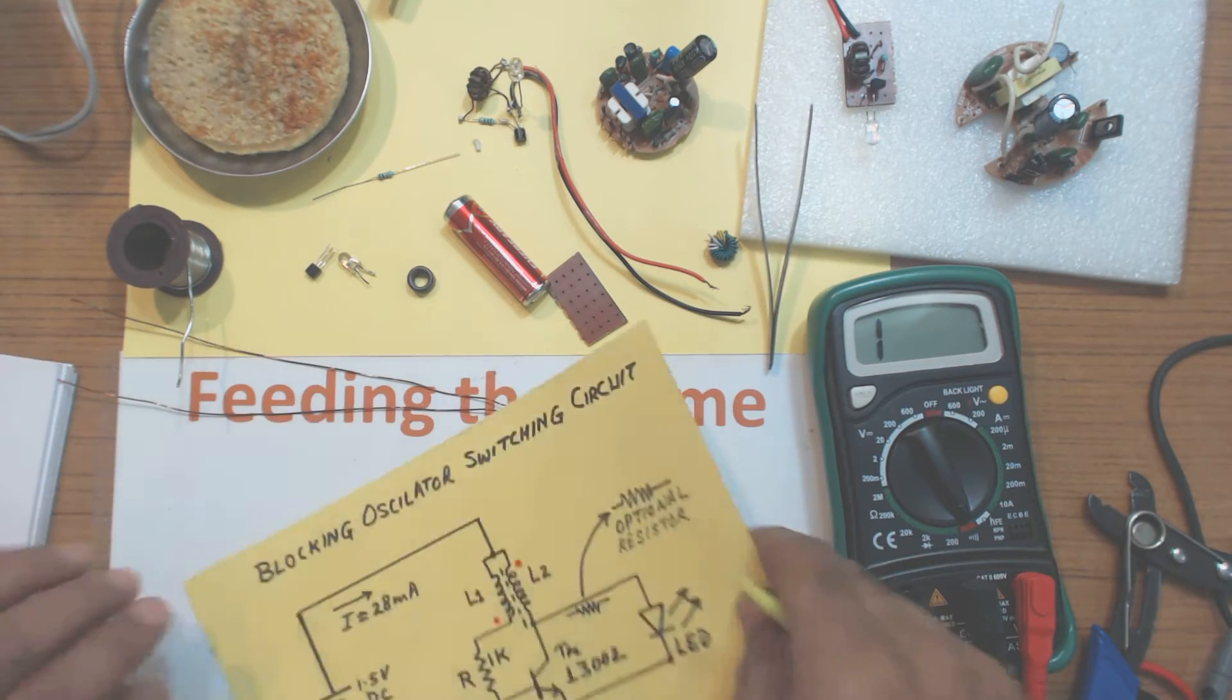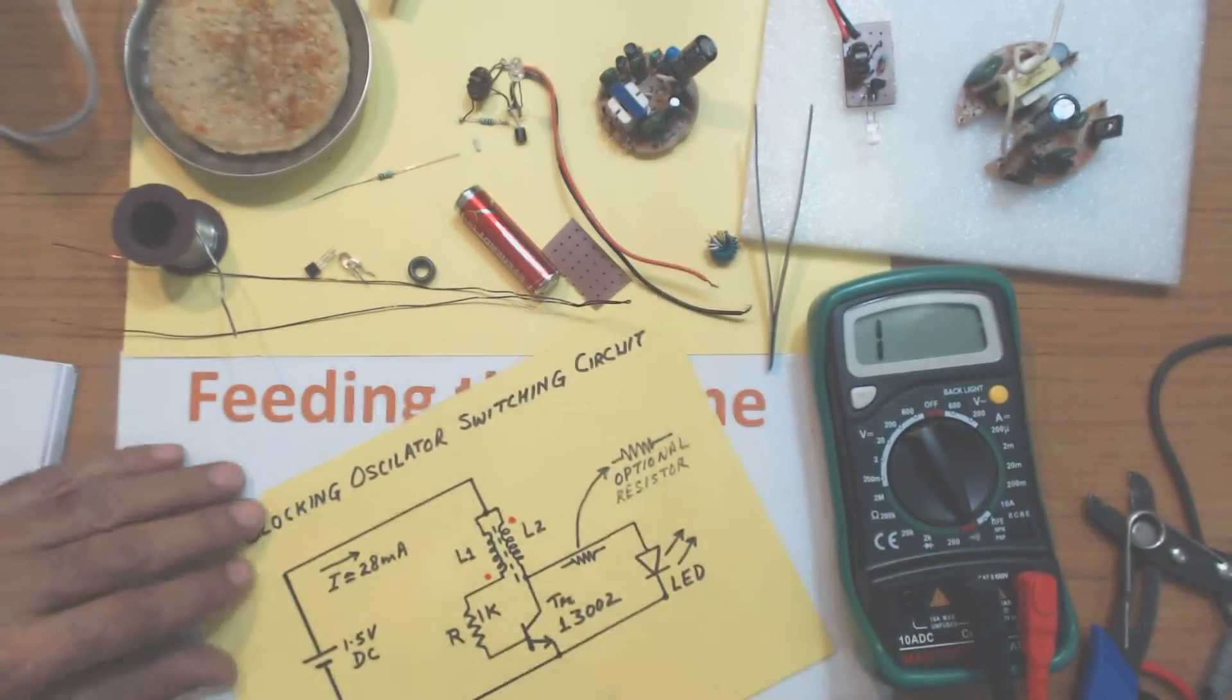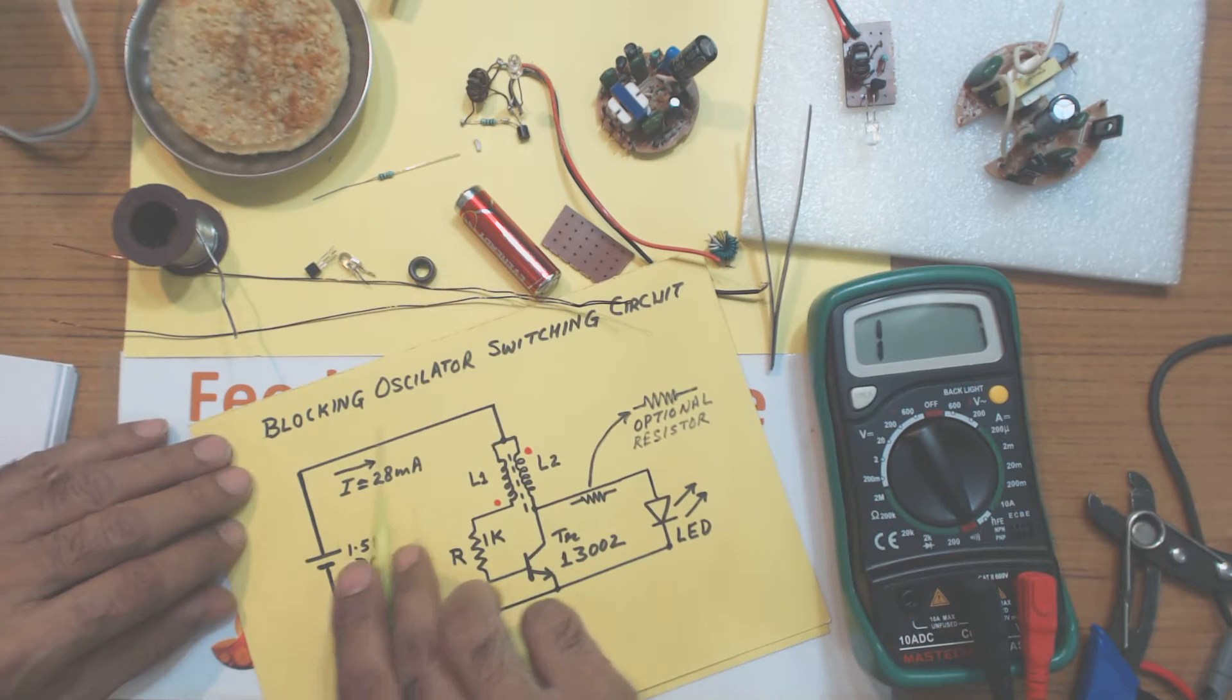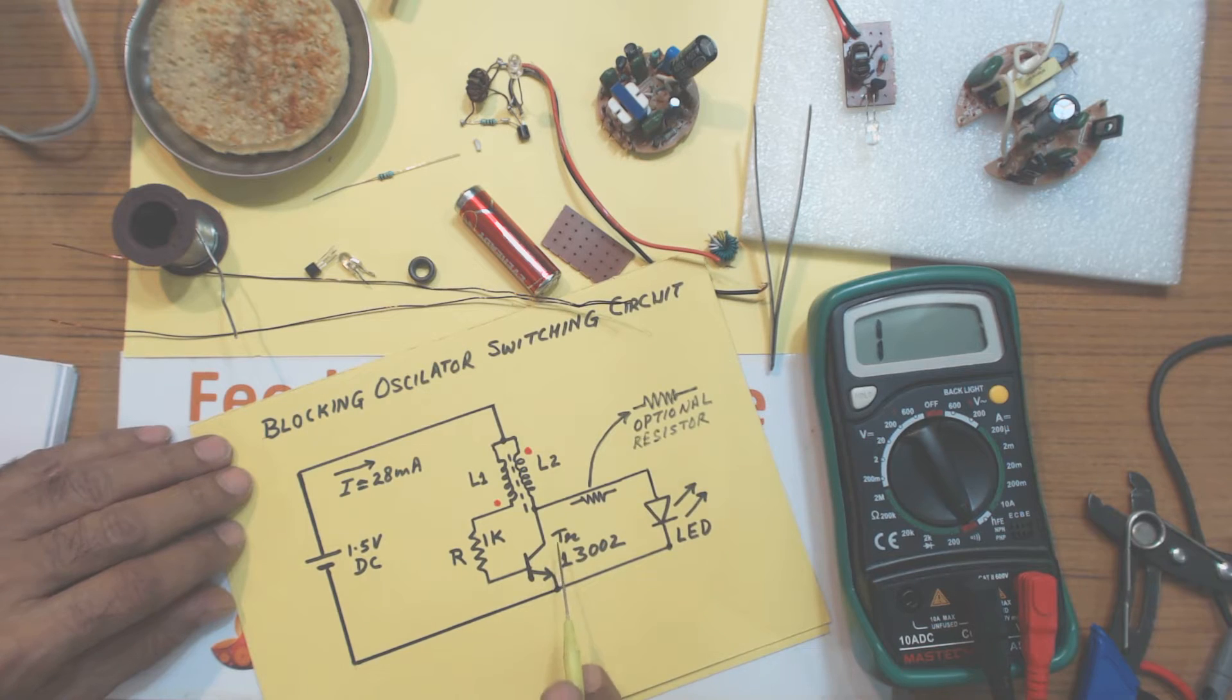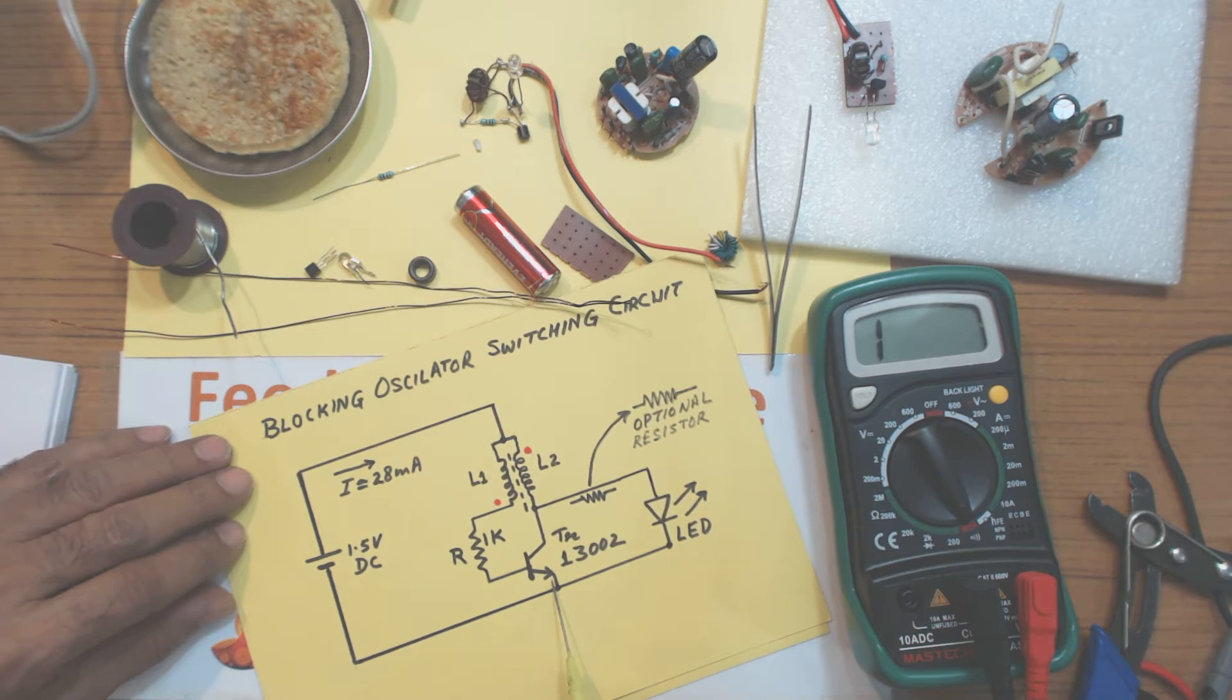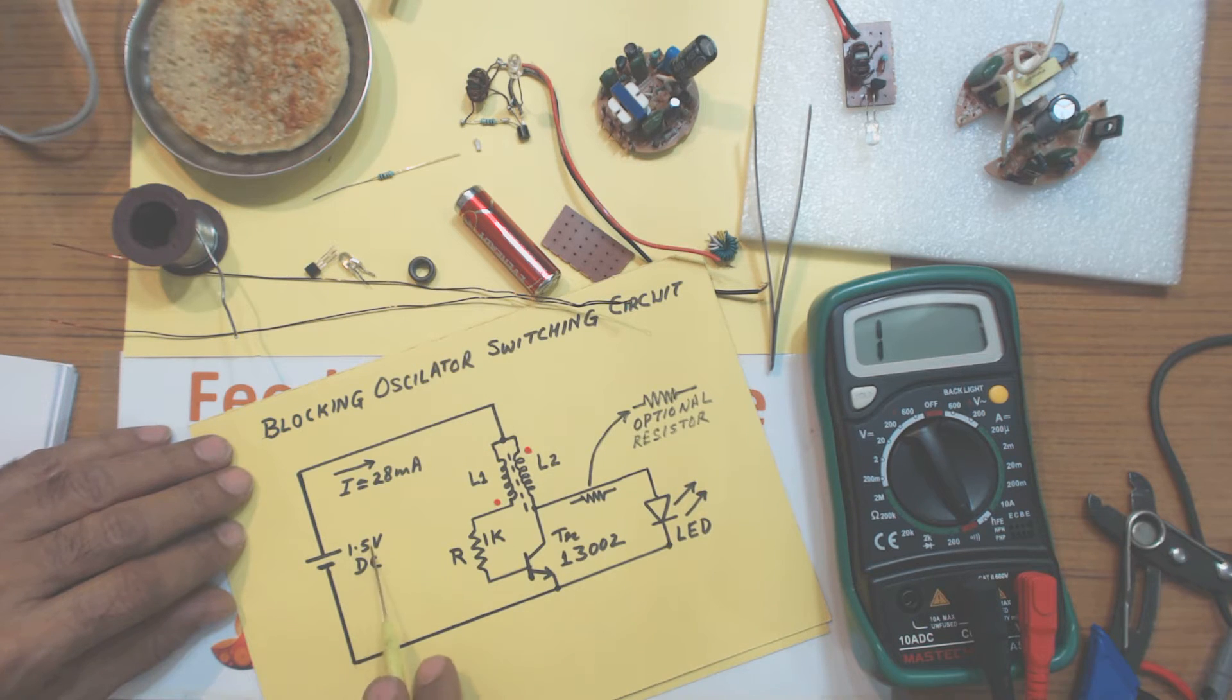Now, here is the circuit diagram I have drawn. This is called a blocking oscillator or you can call it a switching circuit. This is built around a transistor, NPN transistor. And this 1K resistor which you have to purchase is giving a bias to the base of this transistor. And positive voltage is coming through this winding L1 connected to the 1.5 volt DC.